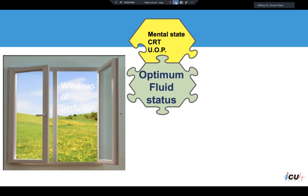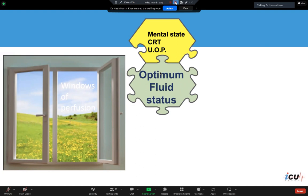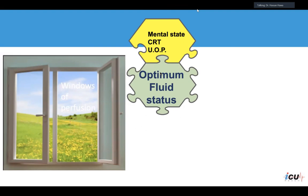These vital organs are very sensitive to hypoperfusion. If the patient's mental state is affected, that indicates hypoperfusion. Prolonged capillary refill time also indicates poor tissue perfusion. Reduced urine output suggests the kidneys are not working adequately — and we know kidneys are quite sensitive to any drop in blood pressure, as illustrated by the relationship between mean arterial pressure and organ blood flow.